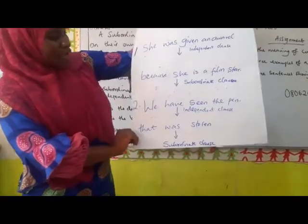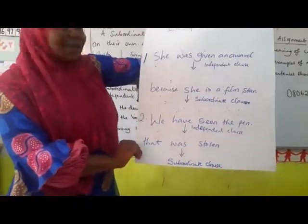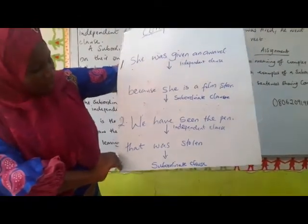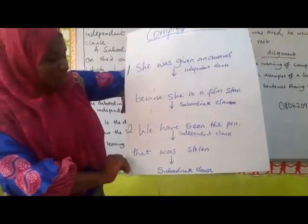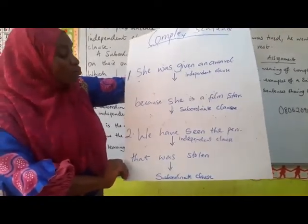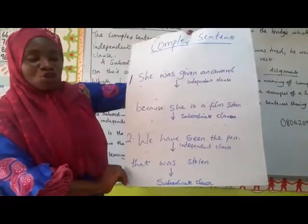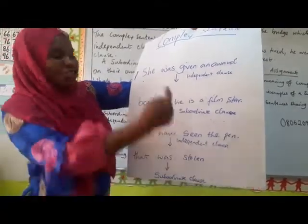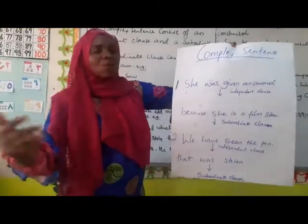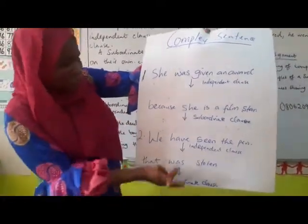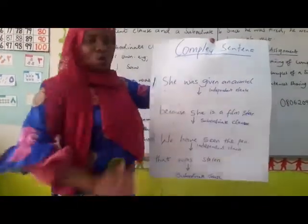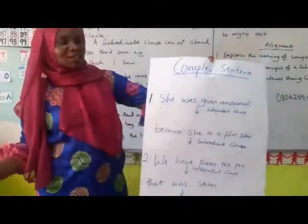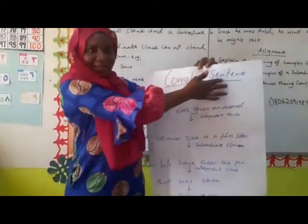Number two: 'We have seen the pen.' This is an independent clause because it expresses a complete thought — it has its verb and its subject. The next part is 'that was stolen.' 'That was stolen' lacks all the requisites to be called a sentence because it does not have the main clause. That is why it is called a subordinate clause — it gives additional meaning to 'the pen.' So the subordinate clause gives additional meaning to the independent clause. That's how the complex sentence works: you have the independent clause and the subordinate clause coming together to form a complex sentence.